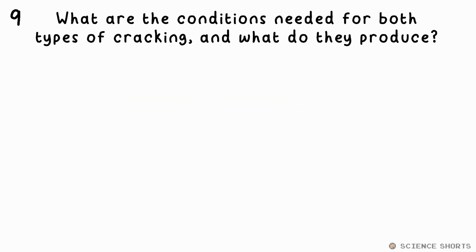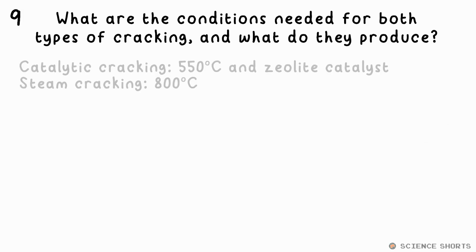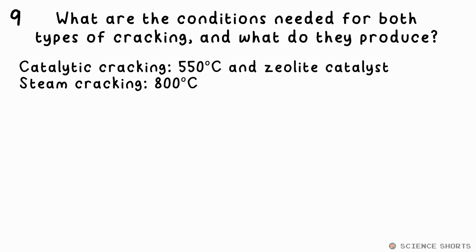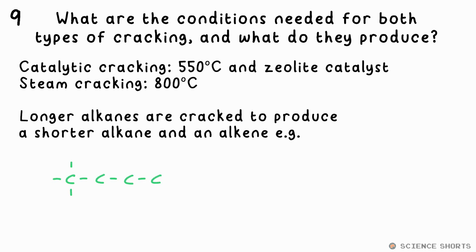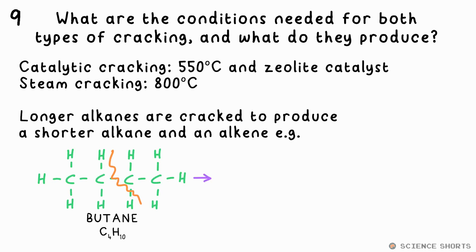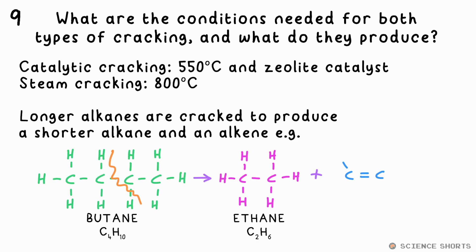Question 9. What are the conditions needed for cracking, and what does the cracking of an alkane always produce? You need either a temperature of around 550°C and a zeolite catalyst for catalytic cracking, or just a higher temperature of more than 800°C for steam cracking. Cracking always produces a shorter alkane and an alkene — there aren't enough hydrogens to make two alkanes.